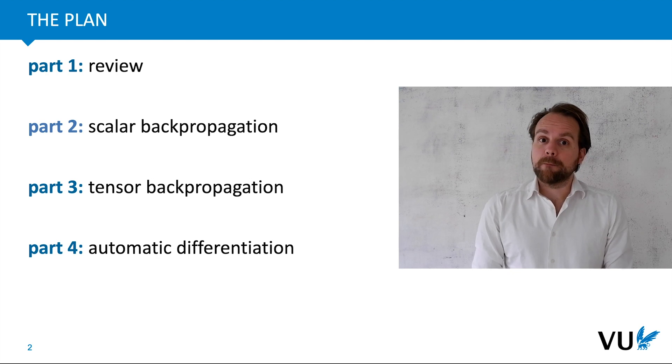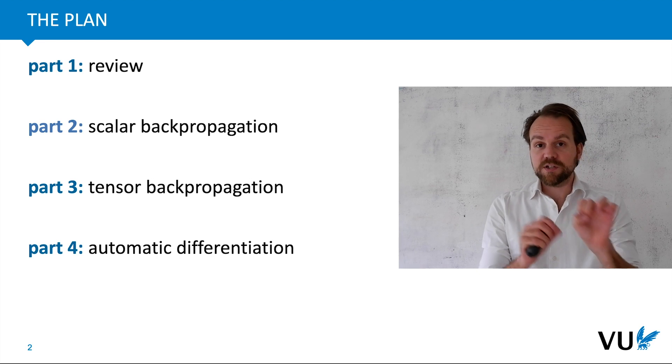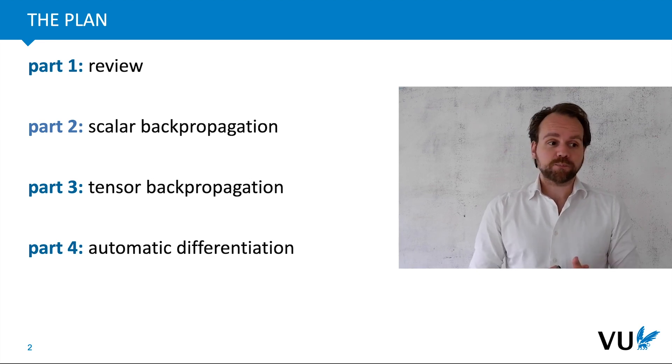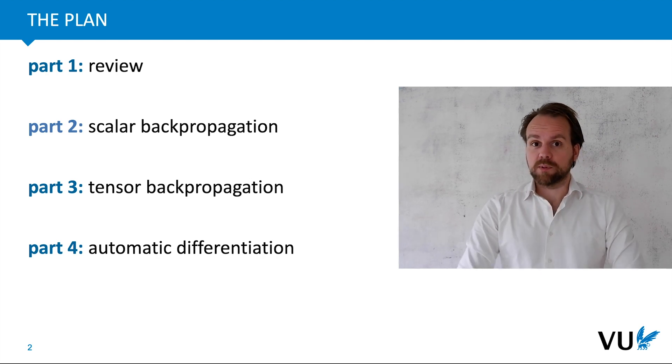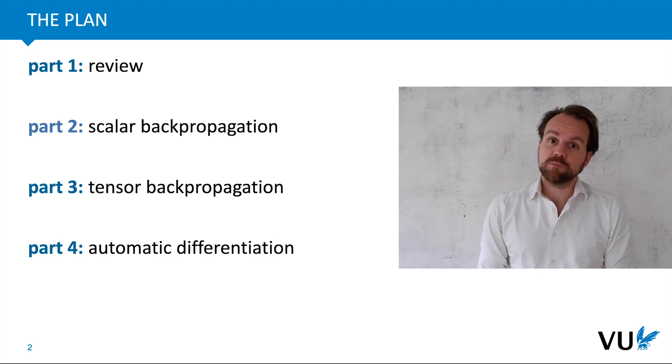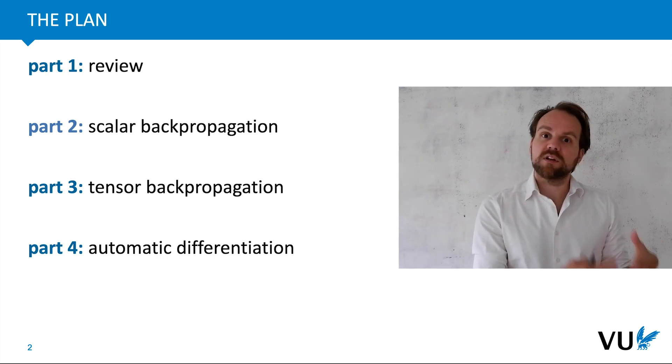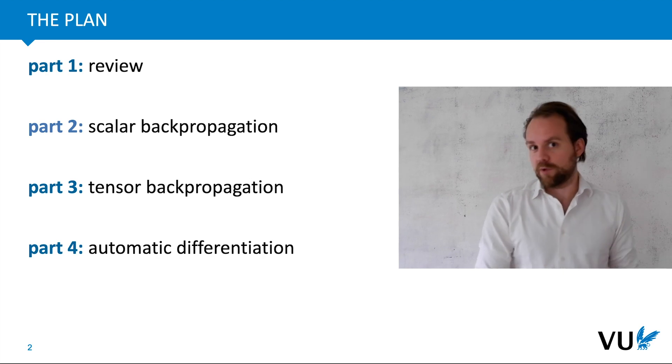Then we'll look into the backpropagation algorithm, which we'll first do from a scalar perspective. So we'll look at individual nodes in the network representing numbers. Then we'll lift that up to tensor backpropagation, where we describe the whole algorithm in terms of operations on matrices and vectors. And finally we'll look at automatic differentiation, how to put this into the computer so the computer does all the work for us.